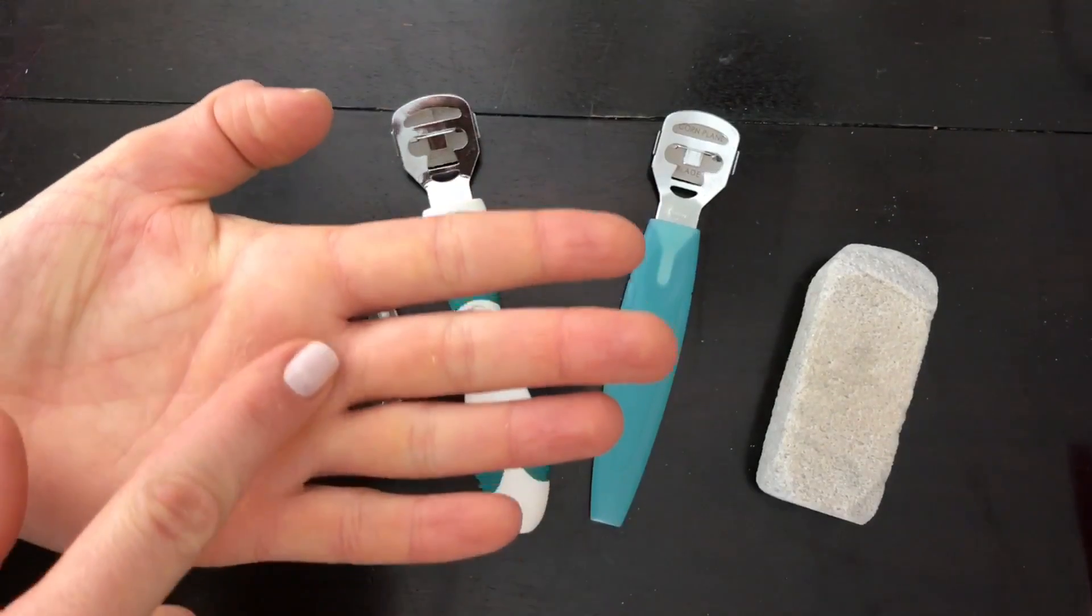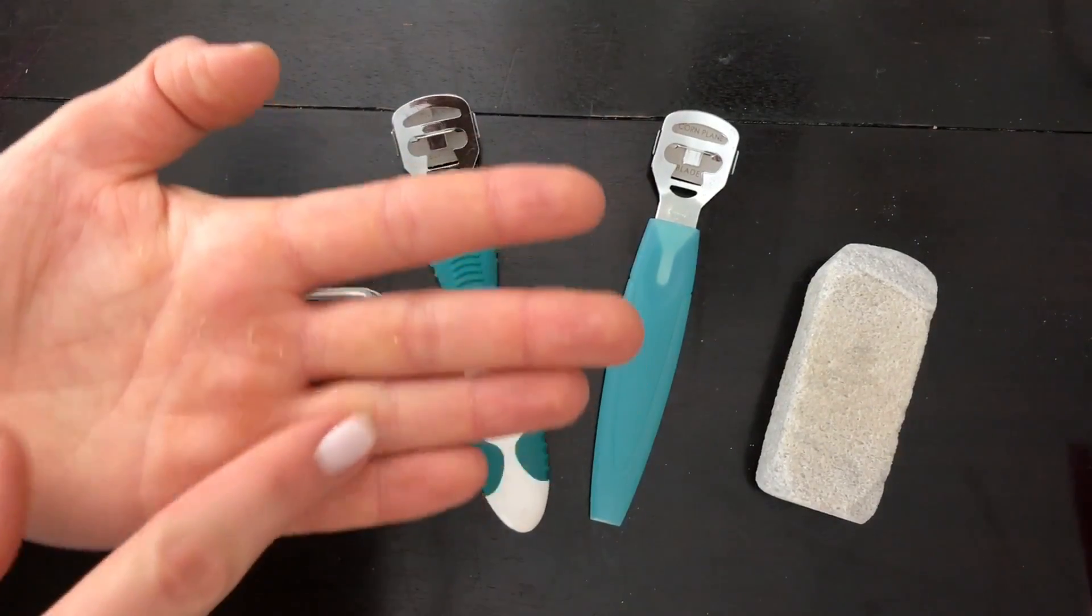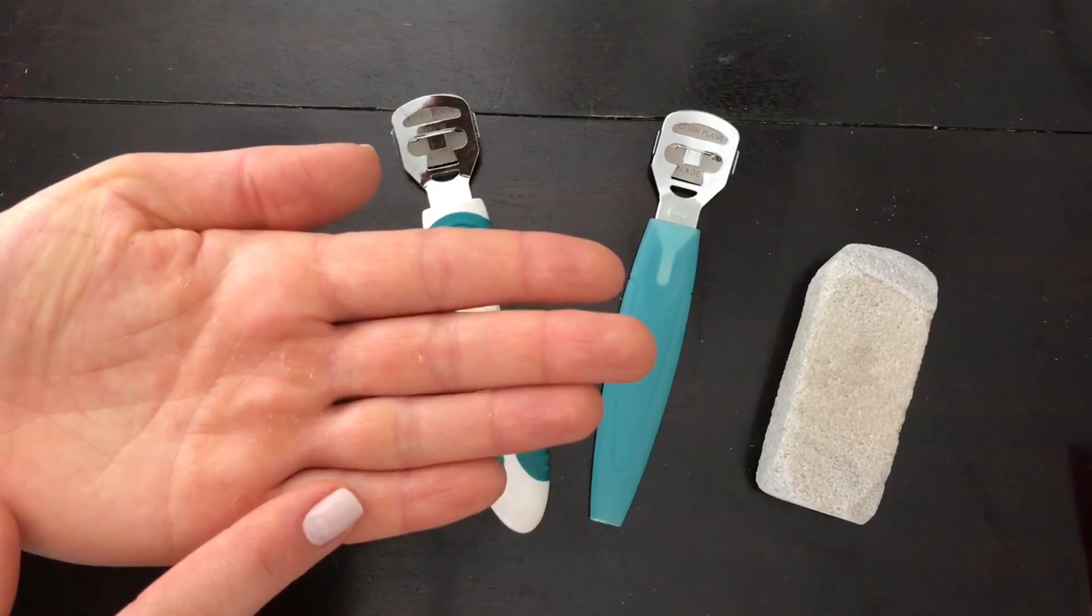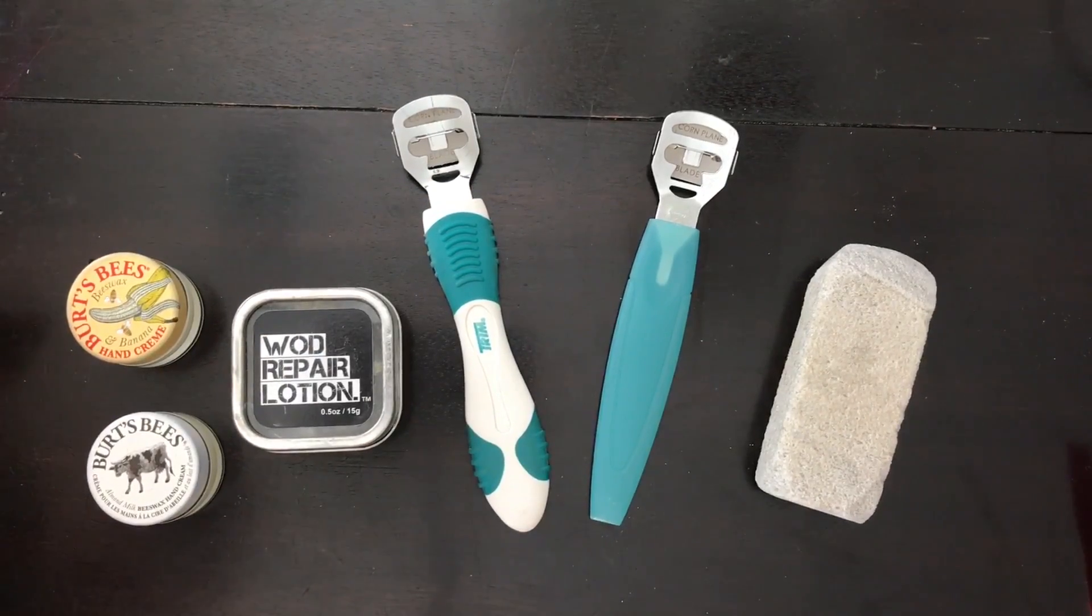Calluses are the thick bumps of skin that you get typically on the palms of your hands. Some people get them right here on the inside of their knuckles from doing lots of barbell work and rig work such as pull-ups or toes-to-bar.